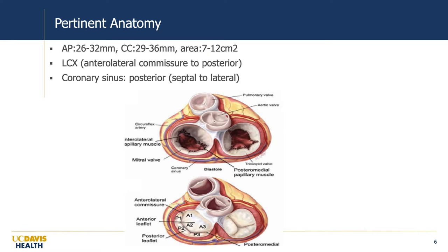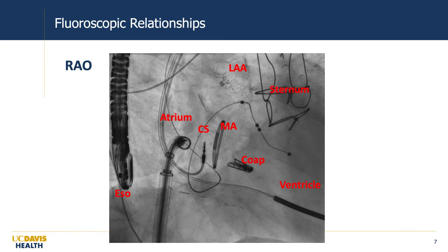The coronary sinus runs posteriorly along the mitral annulus and must also be protected. From an interventional standpoint we live in a world of fluoroscopy and echo, and this image nicely shows the fluoroscopic relationships of the various mitral elements. In this patient there's a mitral annuloplasty ring denoted by MA; below is the coaptation zone of the leaflets with a mitral clip on it; more atrial is the coronary sinus with a coronary sinus lead; and the ventricle is below the mitral apparatus. Fluoroscopically we have different planes of visualization for the different mitral structures, which is important as we develop these therapies.